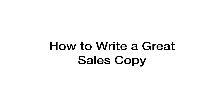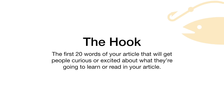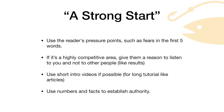Let's go to my computer so I can show you details and talk about each of these steps in more detail. So the first part is the hook — this is where you get people excited or curious about your article. The first 20 words of your article should get people curious or excited about what they're going to learn. It's all about a strong start. Use the reader's pressure points such as fears in the first five words. If it's a highly competitive area, give them a reason to listen to you and not other people — like results or anything like that.